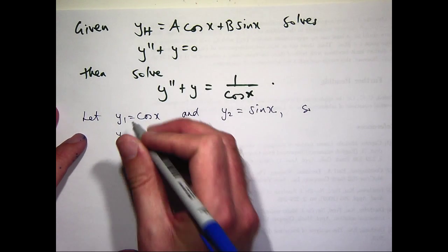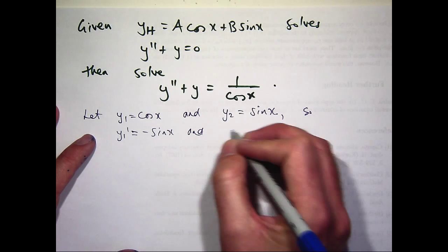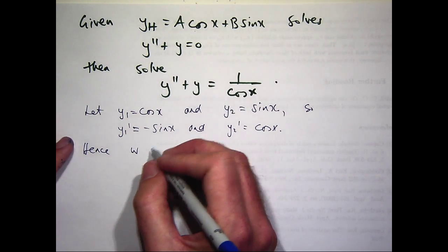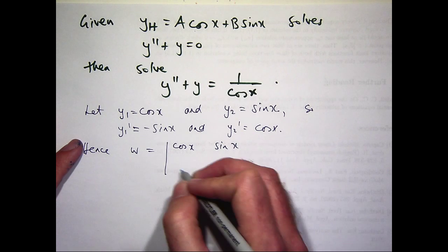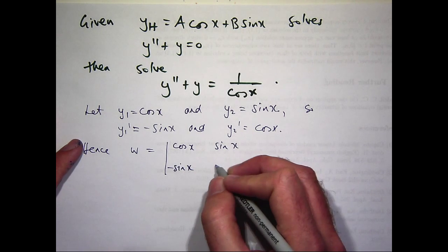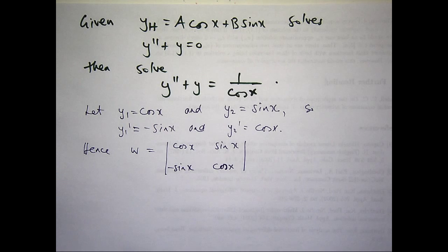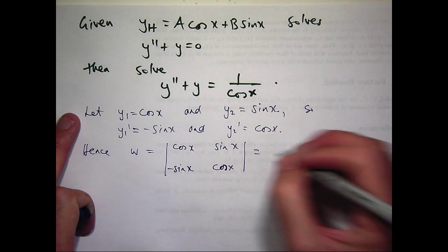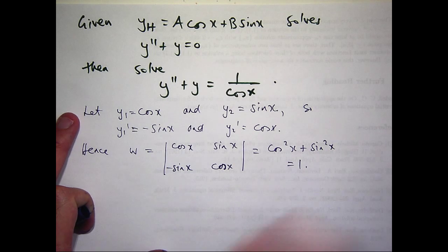So to do that I need to compute the derivatives. So that's going to be something like minus sine x and this derivative will be cosine x. So the Wronskian then is just the following. So now remember for two by two determinants it's just a multiplication. So that times that minus that times that. So it's going to be cosine squared minus minus sine x, which is cosine squared plus sine squared.